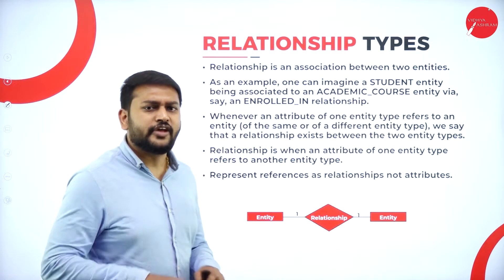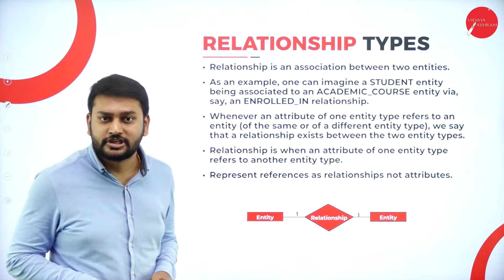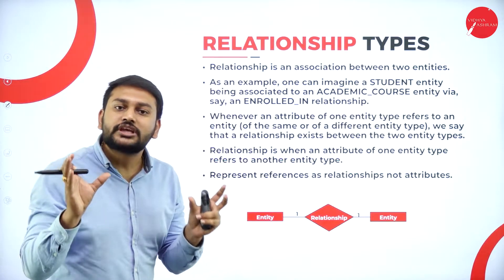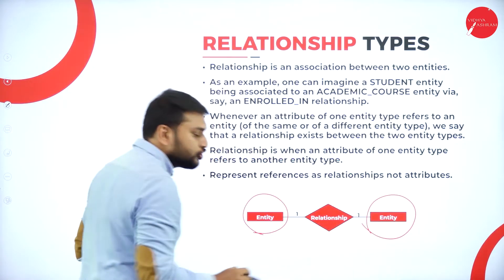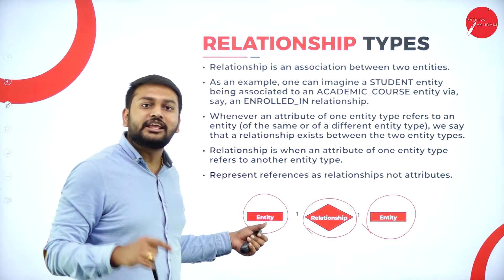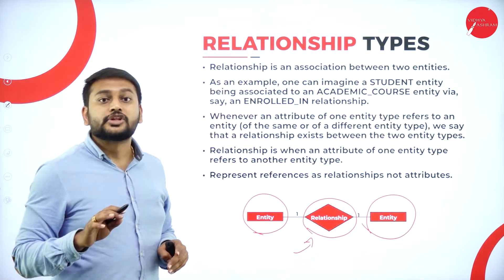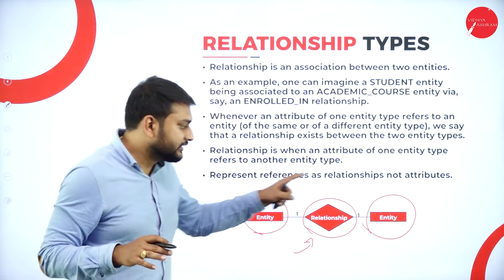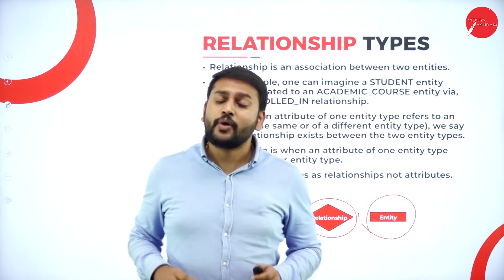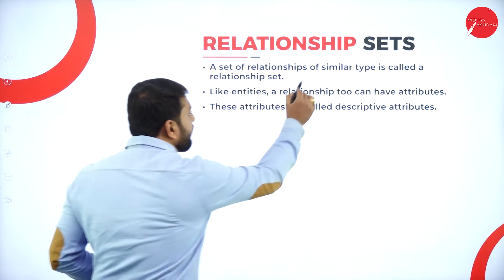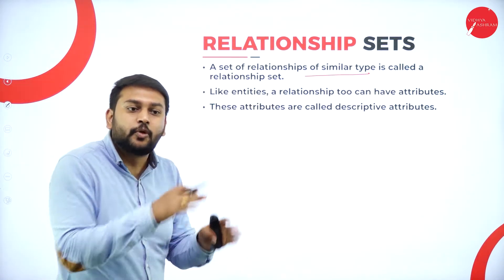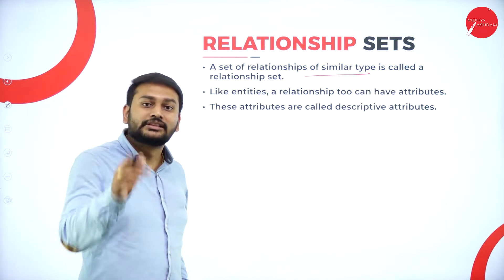Moving forward to the next concept — relationships. What is the meaning of relationship types? We have discussed entities. Imagine I have two different entities — entity one and entity two. The association between two different entities is what I call a relationship. I represent entities with a rectangle and relationships with a diamond symbol. A set of relationships of similar type is called a relationship set.